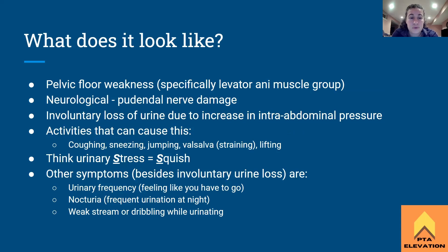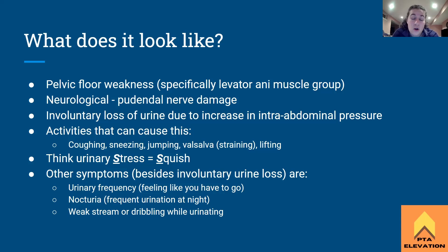What does this look like with a patient? We'll see pelvic floor weakness, especially in the levator ani muscle group — those are responsible for Kegels and similar contractions. It could be neurological — the pudendal nerve could be damaged, which innervates the sacral segments and all the voluntary skeletal muscle of the pelvic floor. The hallmark sign is any involuntary loss of urine due to increased intra-abdominal pressure from activities like coughing, sneezing, jumping, or the Valsalva maneuver while straining or lifting.